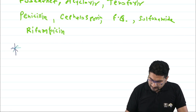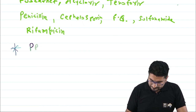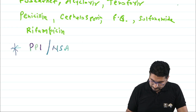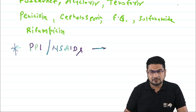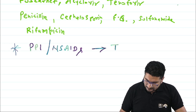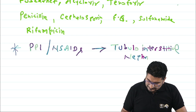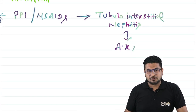PPIs and NSAIDs damage the kidney by first causing tubulo-interstitial nephritis, which then further leads to AKI.